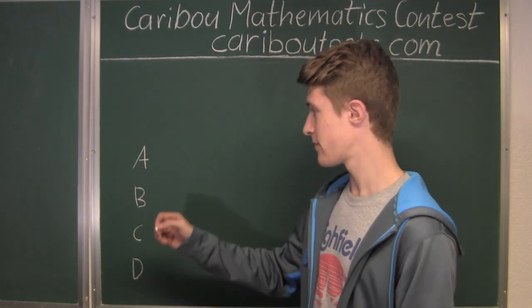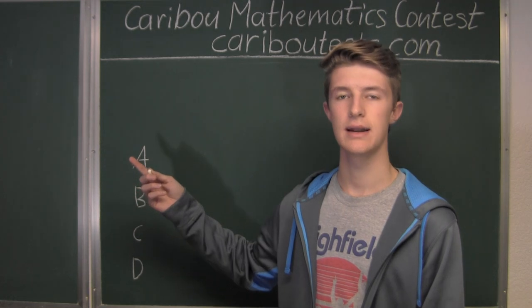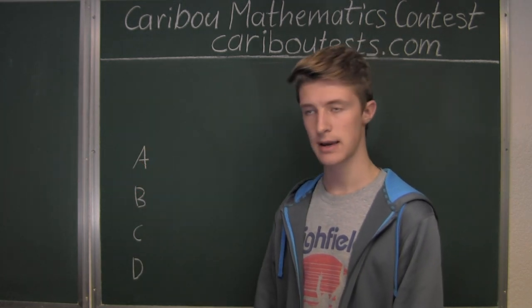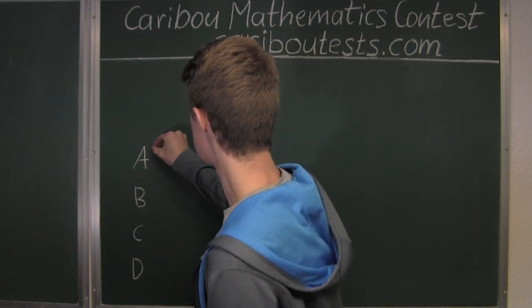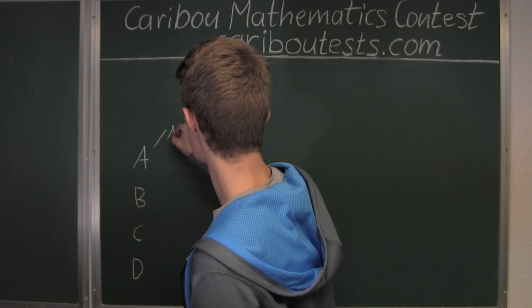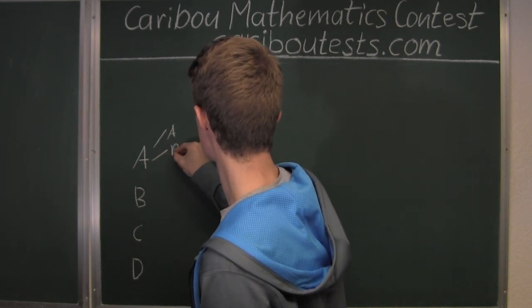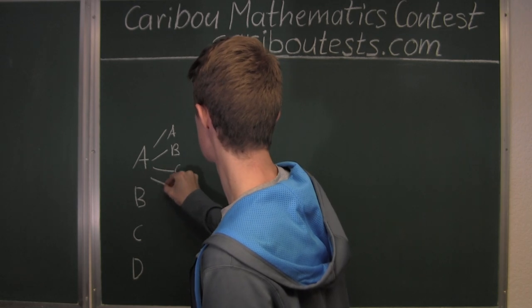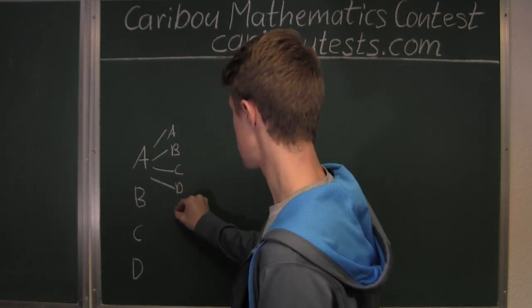So for each of the four options for the first letter, we then again have four options for the second letter. So we have A, B, C, and D, and so on.